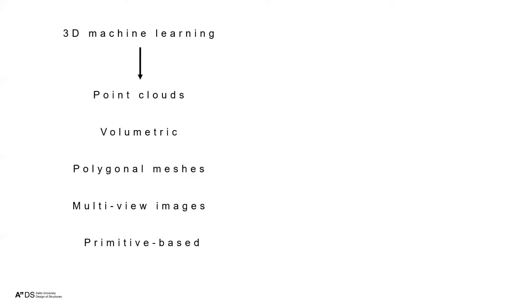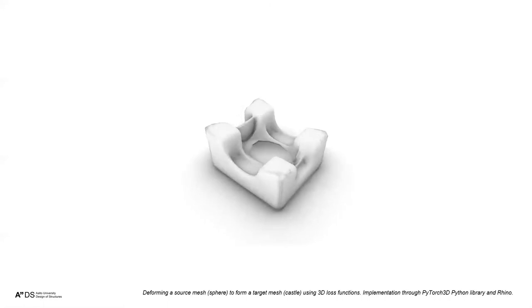This touches on the topic of 3D machine learning — machine learning on big datasets, specifically geometric machine learning on 3D geometry. These geometries can be represented in different ways: point clouds, volumetric representations, voxels, polygon meshes, multi-view images, or primitive-based representations. These are the techniques used, and the next step beyond wireframes involves polygonal meshes.